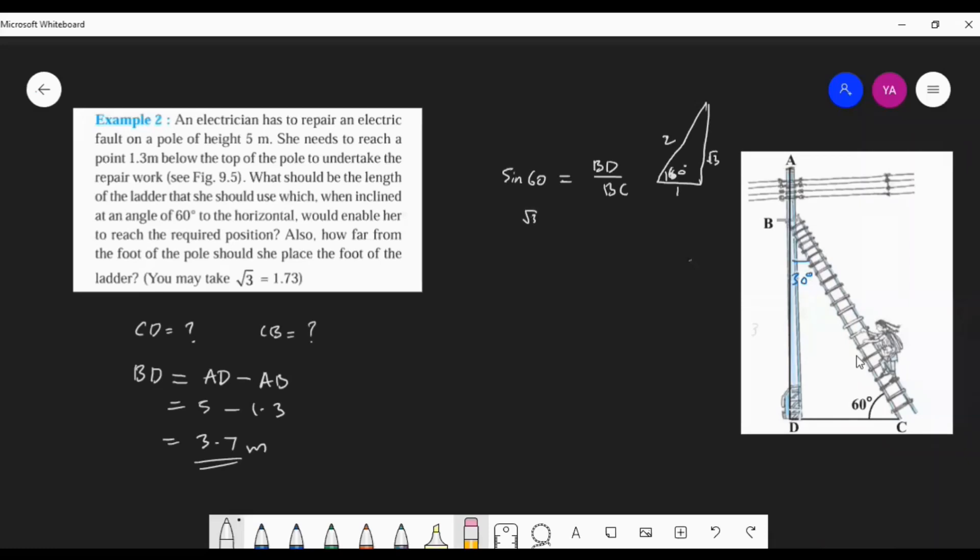Simplify this. 2 into 3.7 is 7.4. So BC is equal to 7.4 by root 3.